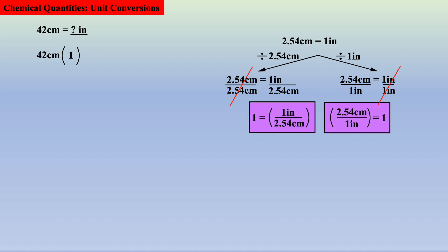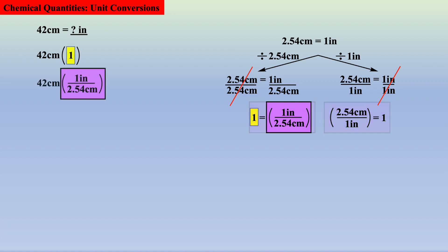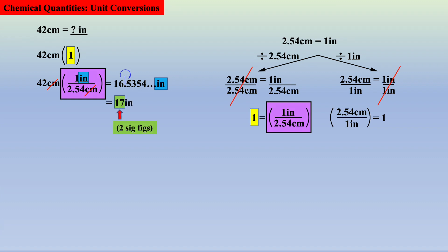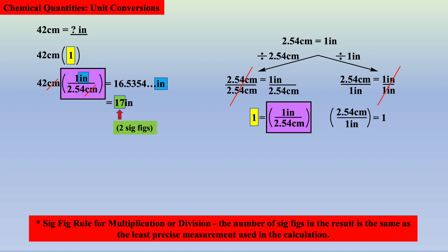If the newly derived expression for the value of 1 is substituted, the centimeter units will cancel and the desired unit of inches will remain. After simple division, we get a result on our calculator which is rounded to two significant figures: 17 inches. It is worth reviewing the significant figure rule for multiplication and division — the least number of sig figs within your arithmetic manipulation must be reflected in your final answer. Thus, two sig figs divided by infinite sig figs is two sig figs.